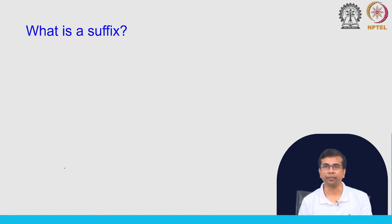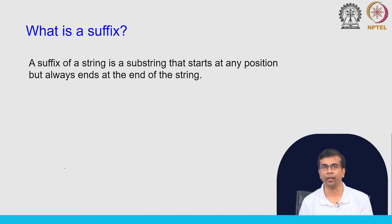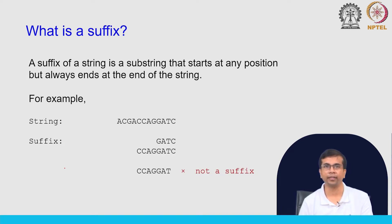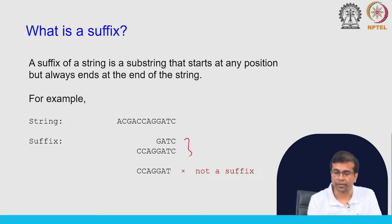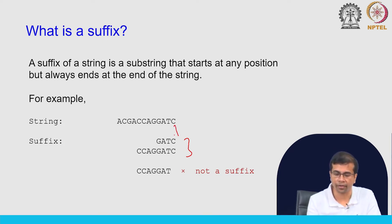To start with, what is a suffix? A suffix is a substring of a string that starts at any position in the string but ends at the end of the string. Here is a string: ACGACCAGG ATC. Some examples of suffixes are GATC — they can start at any position in the string but should end at the end of the string. The one example below is not a suffix because it does not end at the end of the string — it ends at T, which is not the end of the string.